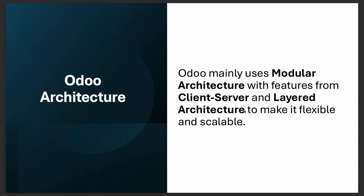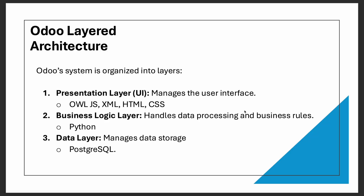Now, which architecture does Odoo use? Odoo mainly uses three architectures: modular architecture, with features from client-server and layered architecture. Let's check each in detail, starting with Odoo's layered architecture.